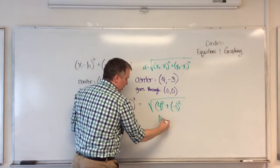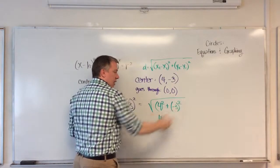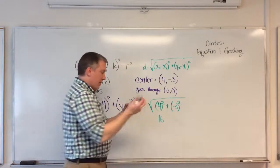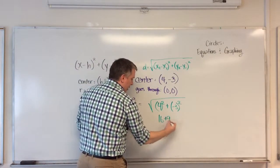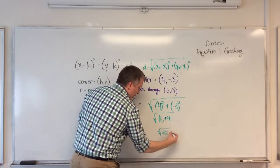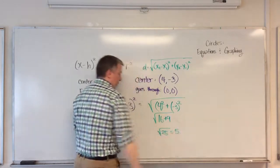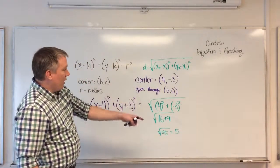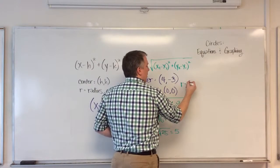4 squared is 16. Negative 3 squared. Negative 3 times negative 3 is positive 9. So it's plus 9. So 16 plus 9 is 25.